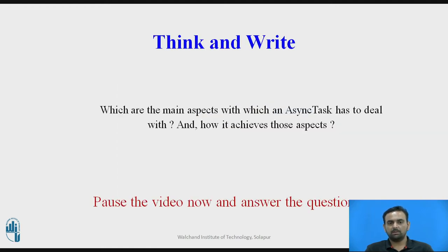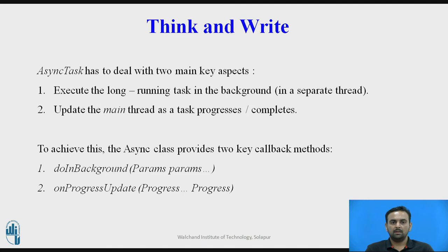Now there is one question: which are the main aspects that AsyncTask has to deal with, and how does it achieve those aspects? AsyncTask has to handle mainly two aspects: executing the long-running task in the background and updating the main thread after its completion. To achieve this, AsyncTask provides mainly two callback methods — doInBackground and onProgressUpdate — as discussed earlier.